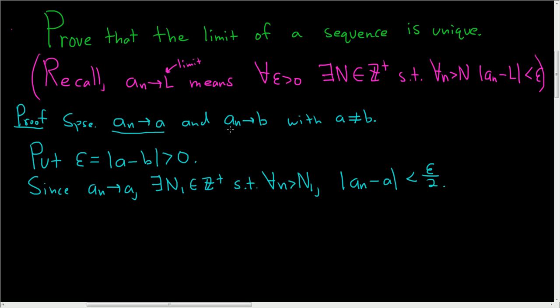Now we're going to do the same thing with this condition here. Since a sub n converges to little b, there exists another positive integer, which we can call N2, such that for all little n bigger than capital N2, we can look at the difference between a sub n and b, take the absolute value, and that should be less than epsilon over 2.